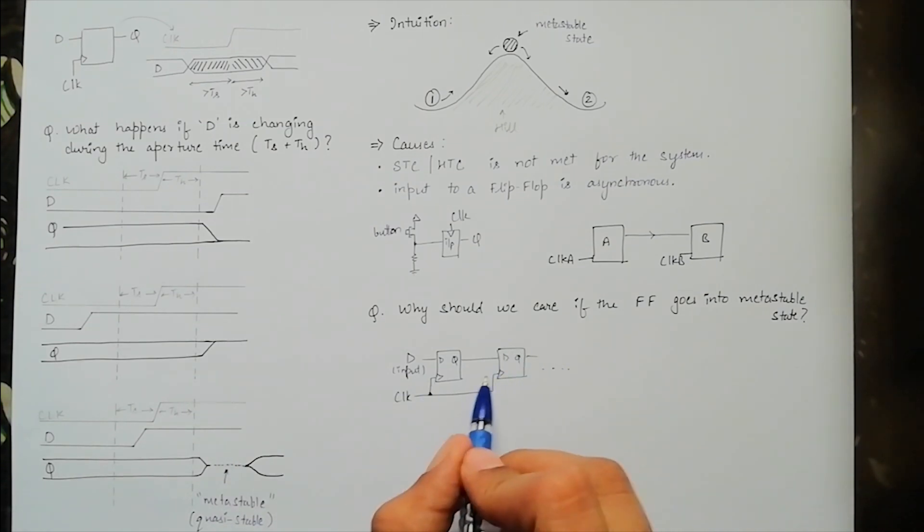But if it fails to resolve in the allotted time, I mean before it reaches the next flip-flop, it can cause system to fail and these failures are very difficult to track down and even correct. So we need to ensure that the system avoids going into a metastable state.